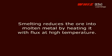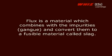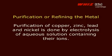Smelting reduces the ore into molten metal by heating it with flux at high temperature. Flux is a material which combines with the impurities and converts them to a fusible material called slag.